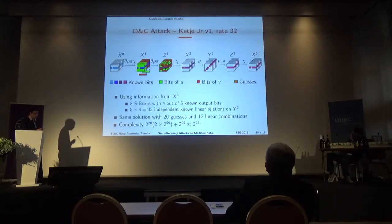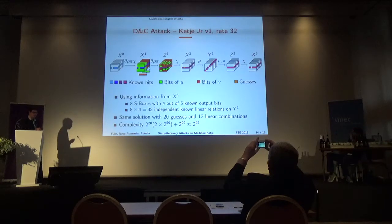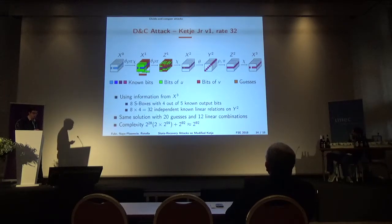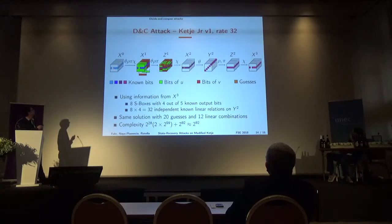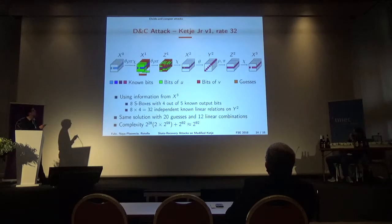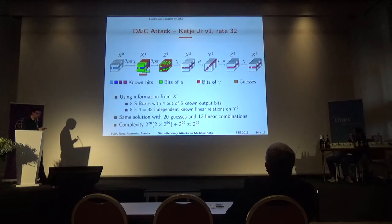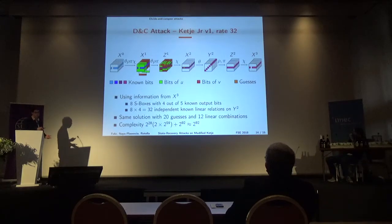We can also apply our attack when the rate is decreased to 32. When the rate decreases to 32, we lose one bit of information per row. These missing bits just need to be inserted into U and V — part into U and part into V for the last four slices. On X2 we guess those bits as preliminary guesses, giving a factor of 2^8. We lose some filtering, so we are left with more solutions at the end of the algorithm, but there is nothing really complicated in adapting the attack.